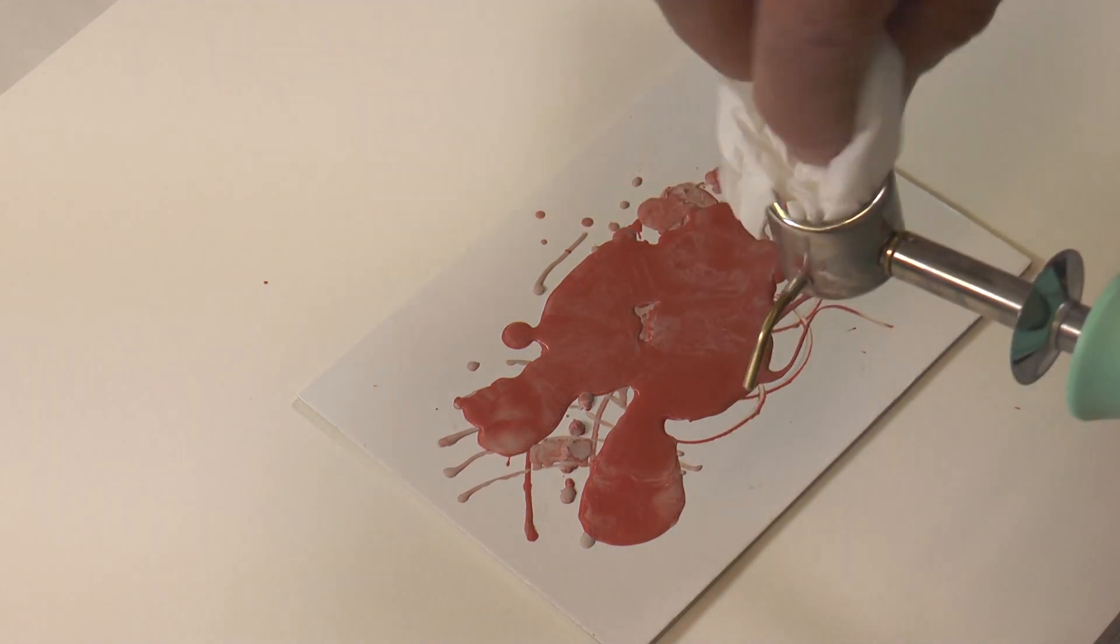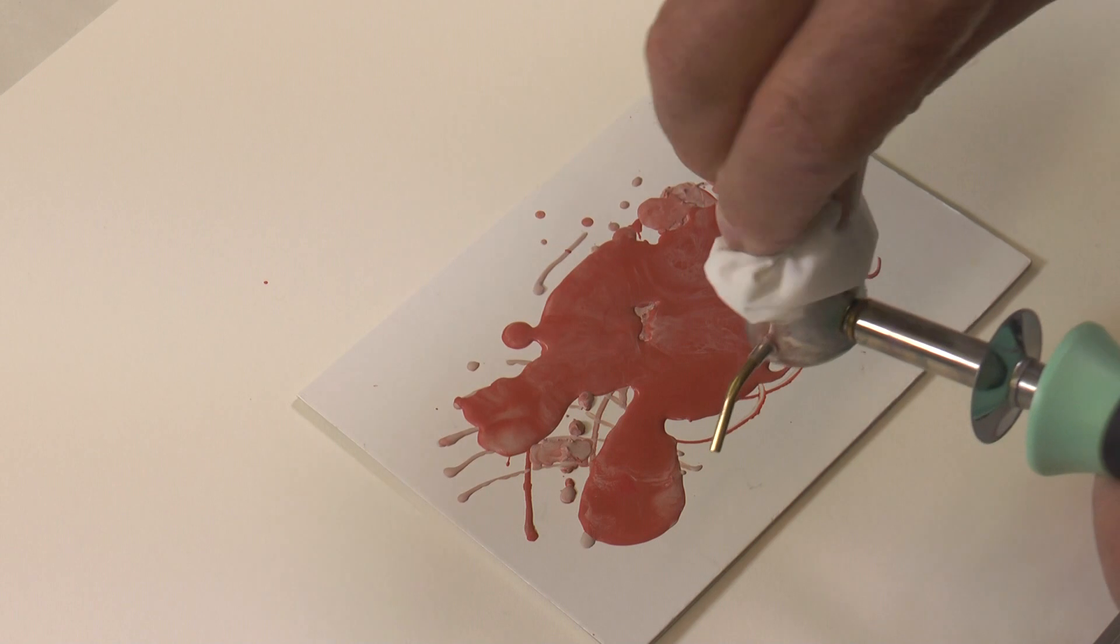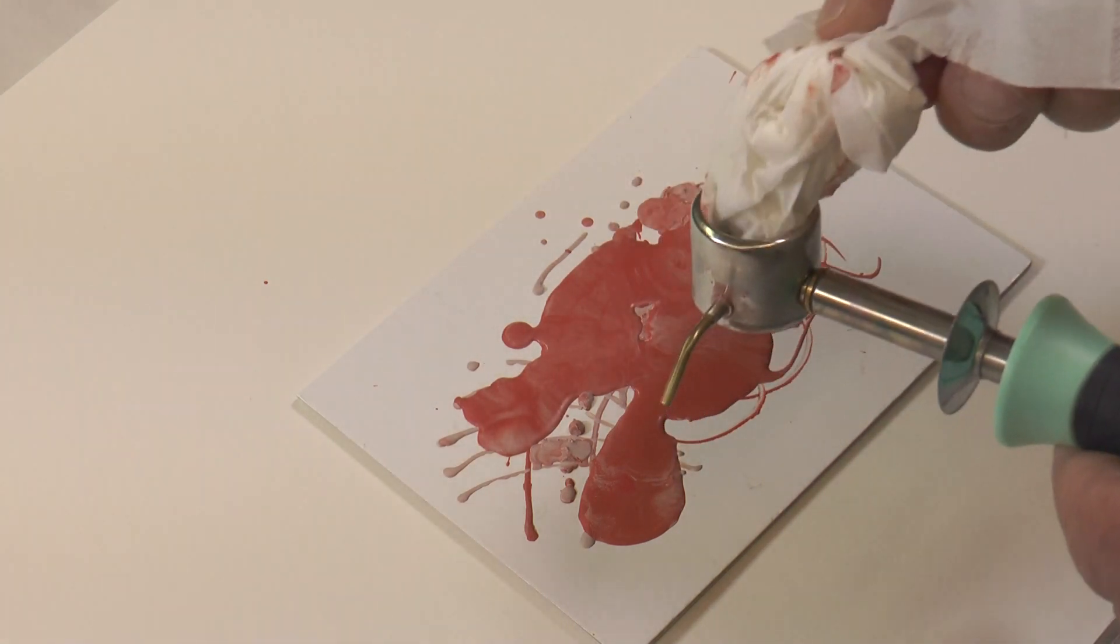And to clean the crucible, just take a tissue, put it inside, rotate. And that'll take out the worst of the wax and then you can add some more.